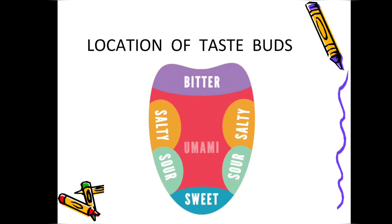The taste buds help us to get the taste of food items. This is a human tongue showing the regions where you can taste different flavours. On the tip of the tongue we taste sweet food. On both sides we taste sour food. The region for salty food is next, and the back portion is for bitter food.